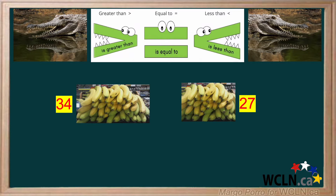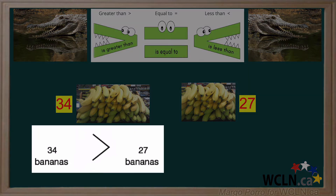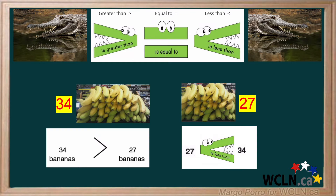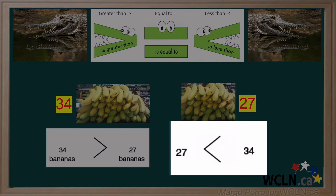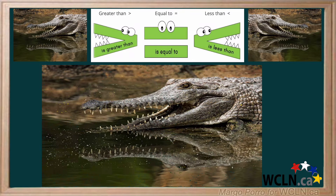When 34 is written first, the mouth is open this way. You don't need to draw the mouth, so it would look like this, and reads: 34 bananas is greater than 27 bananas. If 27 was written first, the mouth would be facing the other way, and reads: 27 is less than 34. Thinking of a hungry alligator will help you put your greater than and less than symbols facing the right way.